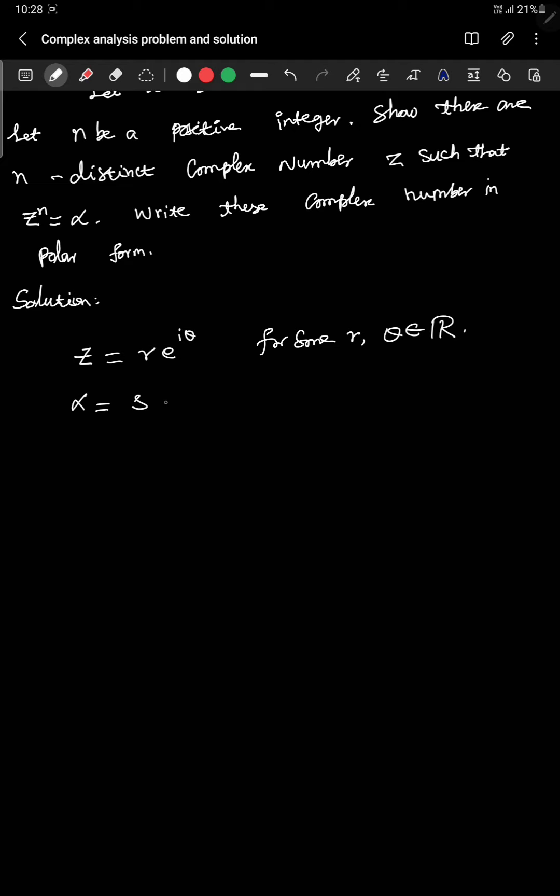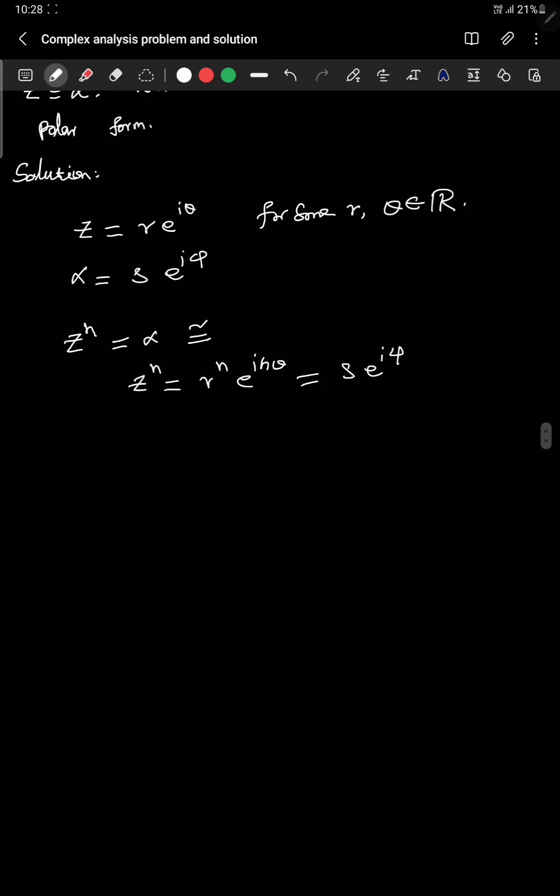Z can be expressed as r·e^(iθ) for some r, θ belongs to real numbers. I hope you know about polar forms. So this α equals similarly let us say s·e^(iφ). Then the equation z^n = α translates into its equivalent. The symbol stands for equivalent. z^n means r^n·e^(inθ) which is s·e^(iφ).